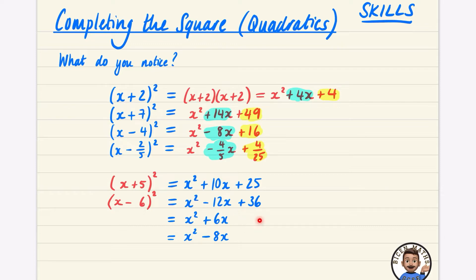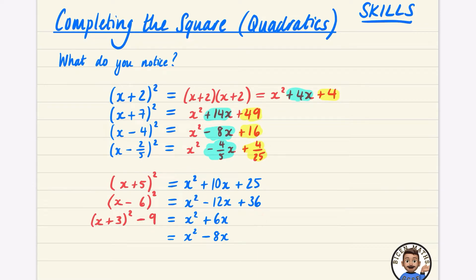This next case is different because there's no constant term, so we focus on the middle term. Since the middle term is double the number in the bracket, the number here is 3, giving x plus 3 squared. But if we expanded x plus 3 squared there would be an extra plus 9 that we don't want, so we subtract it: x squared plus 6x equals x plus 3 squared minus 9.